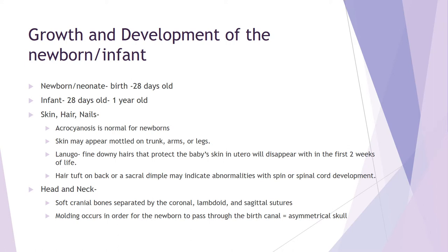A hair tuft on the back or sacral area is an abnormality and should be a red flag for some sort of spinal cord development issue. Fine downy hair dispersed evenly over the body is okay, but a big patch of hair right above the bottom in the lower back could indicate spinal cord development that didn't go right in utero. If you find this during assessment, you need to notify someone up the chain.